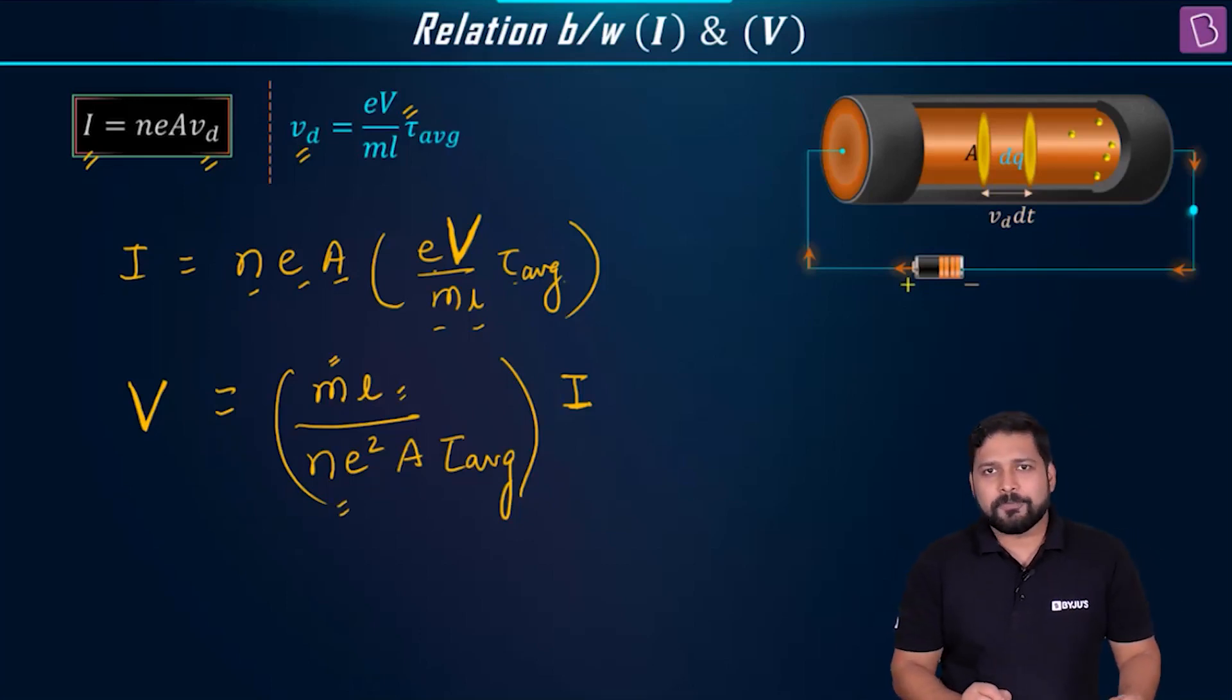Number of electrons per unit volume, not changing. Charge on an electron, square of that, not changing, constant. A, if you are not changing the conductor, we are not changing all these. And tau average, average relaxation time.